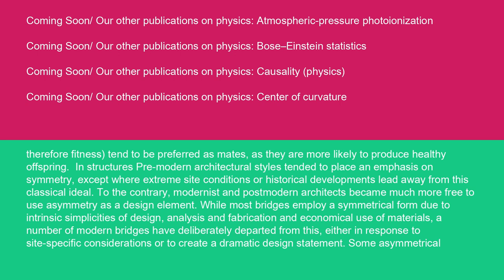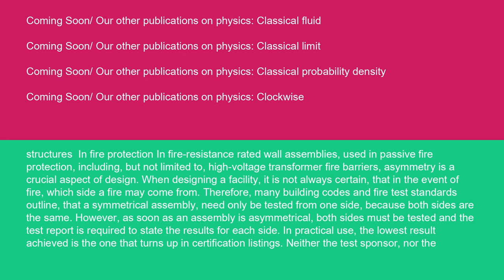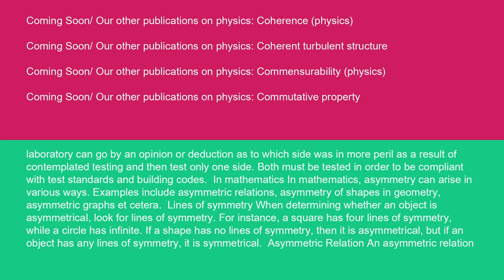Some asymmetrical structures in fire protection. In fire resistance rated wall assemblies used in passive fire protection, including but not limited to high-voltage transformer fire barriers, asymmetry is a crucial aspect of design. When designing a facility, it is not always certain that in the event of fire which side of fire may come from. Therefore, many building codes and fire test standards outline that a symmetrical assembly need only be tested from one side because both sides are the same. However, as soon as an assembly is asymmetrical, both sides must be tested and the test report is required to state the results for each side. In practical use, the lowest result achieved is the one that turns up in certification listings. Neither the test sponsor nor the laboratory can go by an opinion or deduction as to which side was in more peril as a result of contemplated testing and then test only one side. Both must be tested in order to be compliant with test standards and building codes.